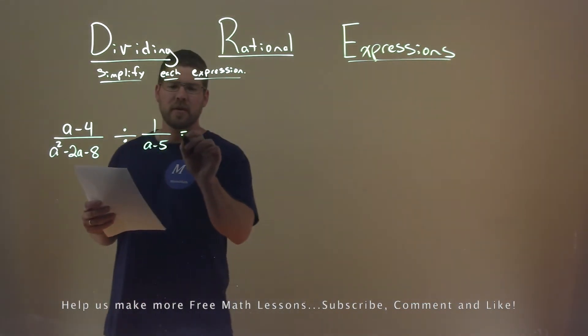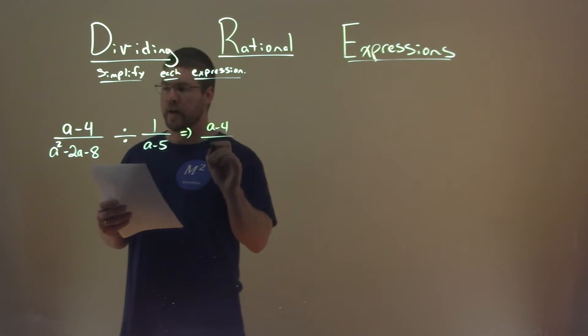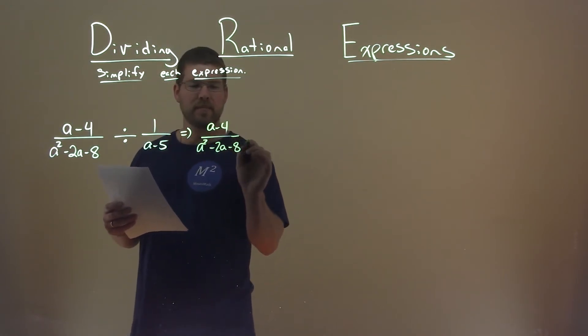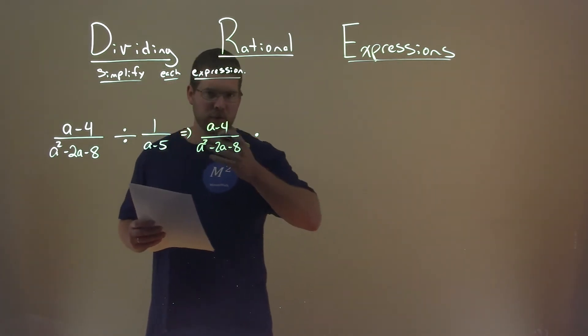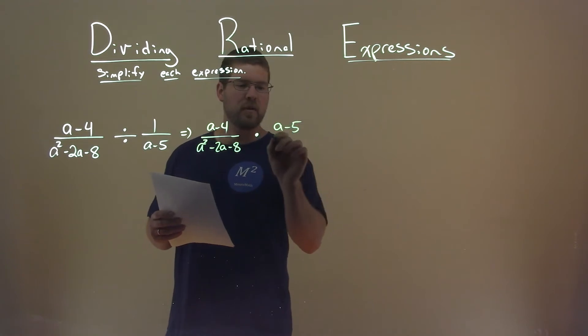I'm going to rewrite this as a multiplication problem. a minus 4 divided by a squared minus 2a minus 8 stays the same. But instead of dividing, I'm going to multiply, and we flip the second fraction. a minus 5 is now on the numerator, and then the denominator is 1.